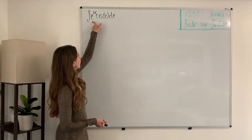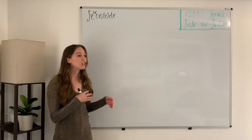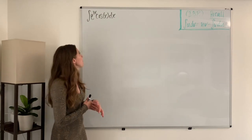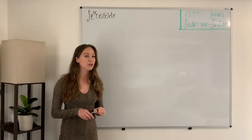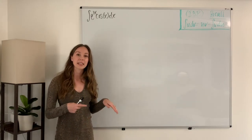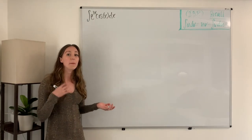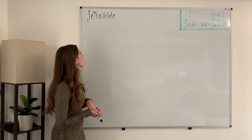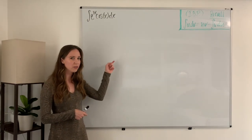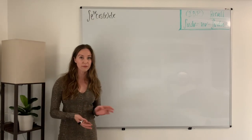For e to the 3x, if we continue taking derivatives of that function, we can do that infinitely because of the nature of the e to the x function. Likewise, for cosine of x, if we take derivatives of that function, we can keep doing that continuously. For cosine of x and e to the x, we have a pattern that will emerge, so if we keep doing integration by parts, we could keep doing that forever, which is obviously not going to solve our problem.